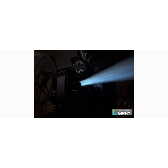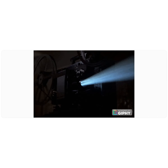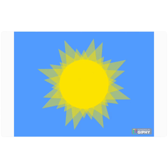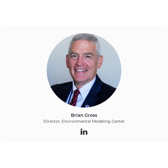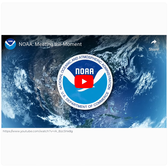And inside the computer, this movie starts playing out. The sun is shining on the ground, sun heats the ground, ground gets warm, the air next to the ground gets warm, warm air rises, water vapor starts to rise. This, by the way, is Brian Gross, Director of the Environmental Modeling Center. And yes, we're talking about forecasting the weather.